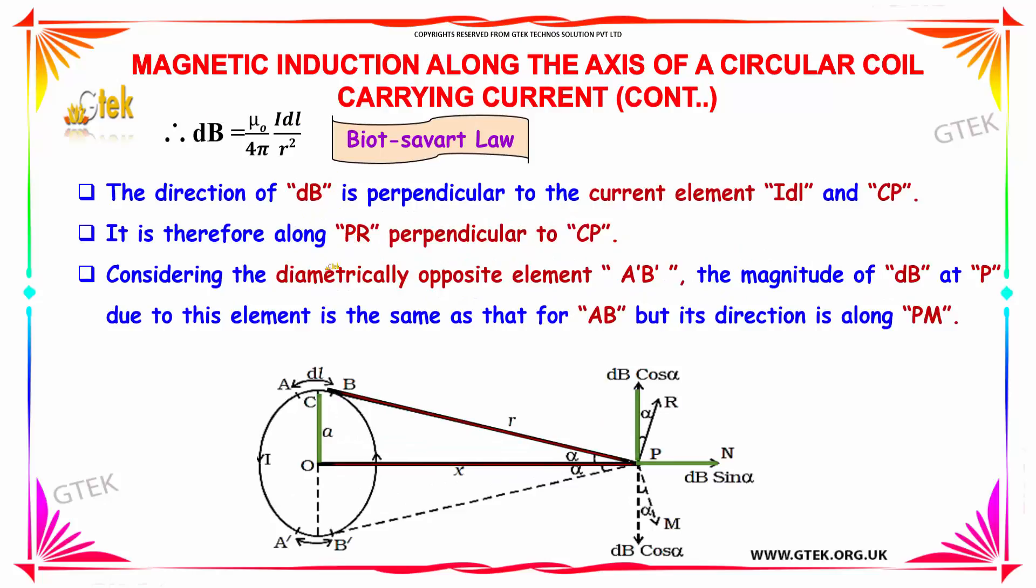The direction of dB is perpendicular to the current element i into dl and CP. It is therefore along PR because this is 90 degrees here.